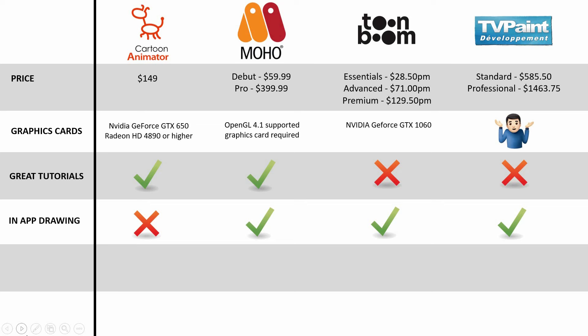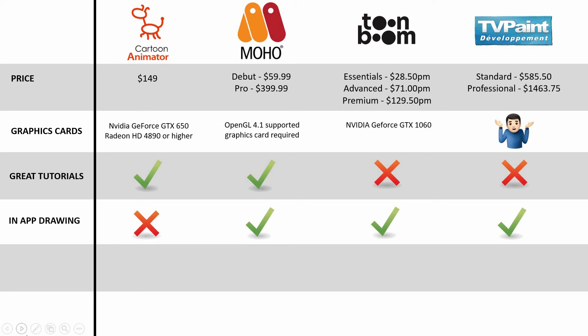The next feature is in-app drawing — whether the software has drawing capabilities with brushes so you can draw your characters, scenes, backgrounds, and props inside the software itself. All of them have in-app drawing except for Cartoon Animator. With Cartoon Animator, you'll need a third-party software like Photoshop, Clip Studio Paint, or Affinity Designer, which will add to the overall cost.